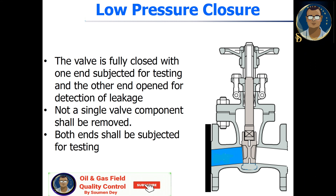Low pressure closure, or low pressure seat test: the valve is fully closed with one end subjected for testing and the other end open for detection of leakage. Not a single valve component shall be removed, and both ends shall be subjected for testing. As you can see in the picture, a seat is closed and water or hydro test fluid is filled — shown in blue — and from the other side we check if there is any leakage.